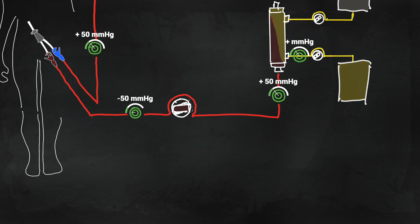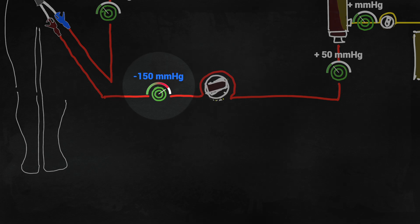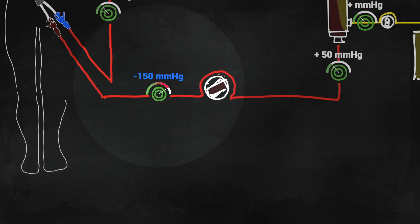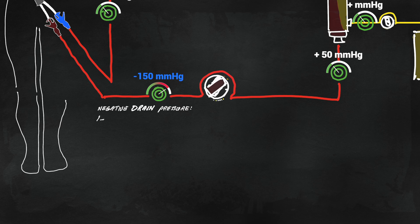When access pressure gets increasingly negative, the reason is due to the pump pulling harder to maintain a constant flow, which could be due to catheter clotting or kink in the line.